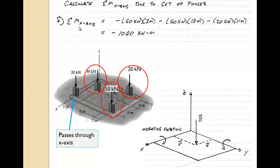So calculating the sum of all the moments about the x-axis, we get the 50 kilonewton at 3 meters coming in as a negative, the other 50 kilonewton at a moment arm of 13 meters, and lastly the 20 kilonewton force at a moment arm of 11.